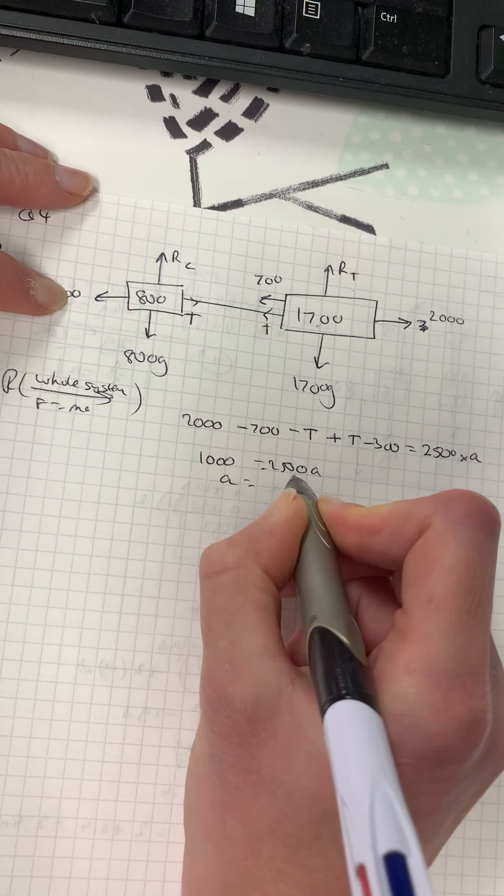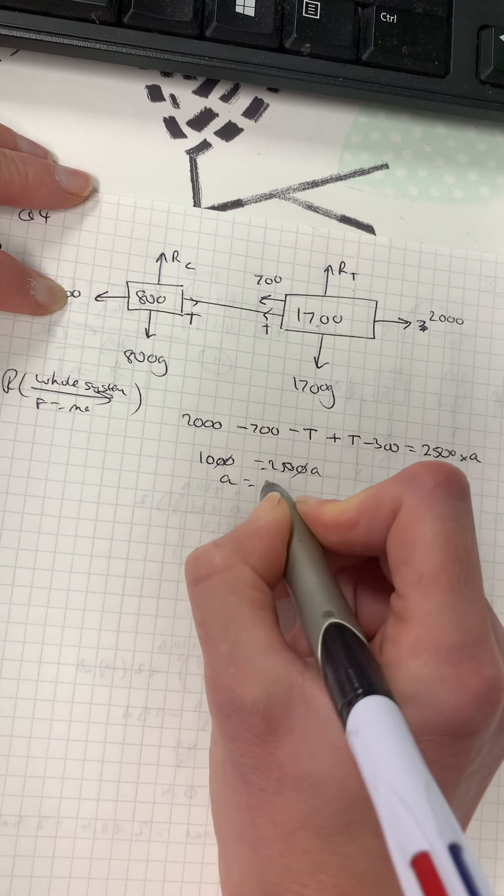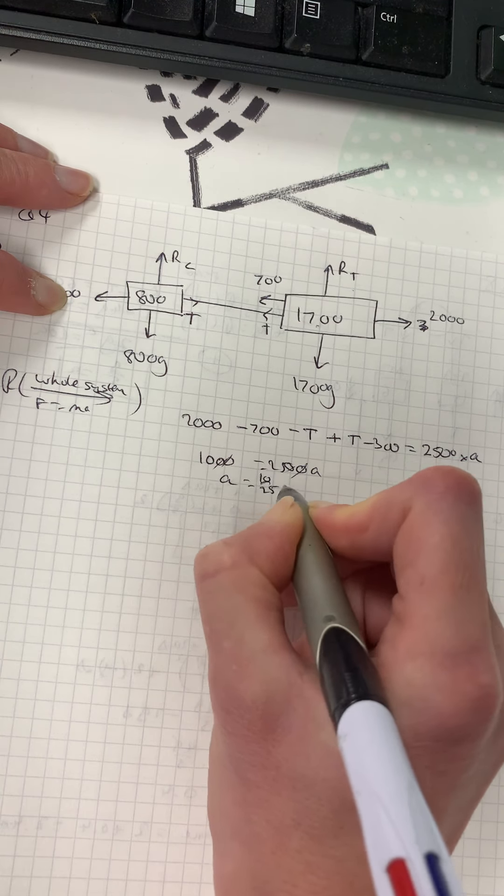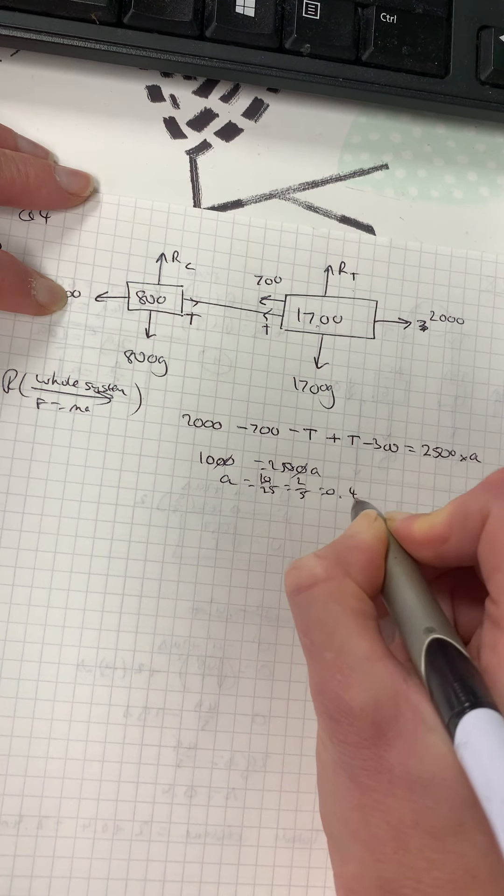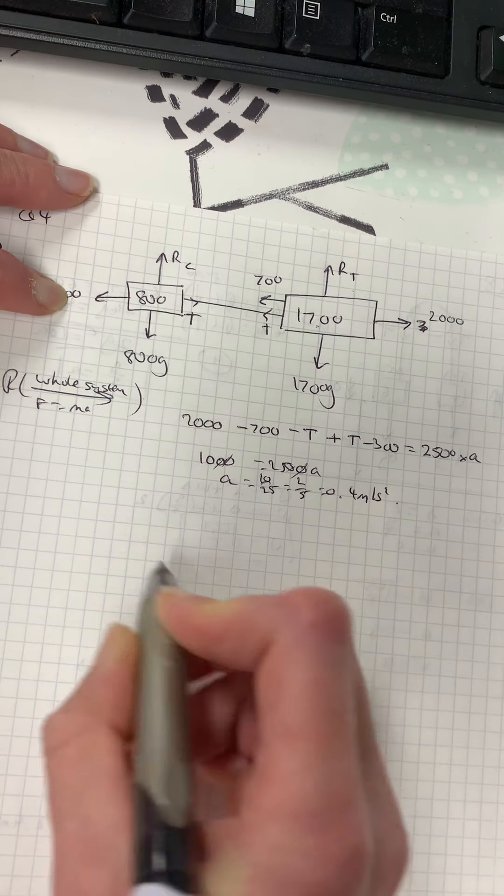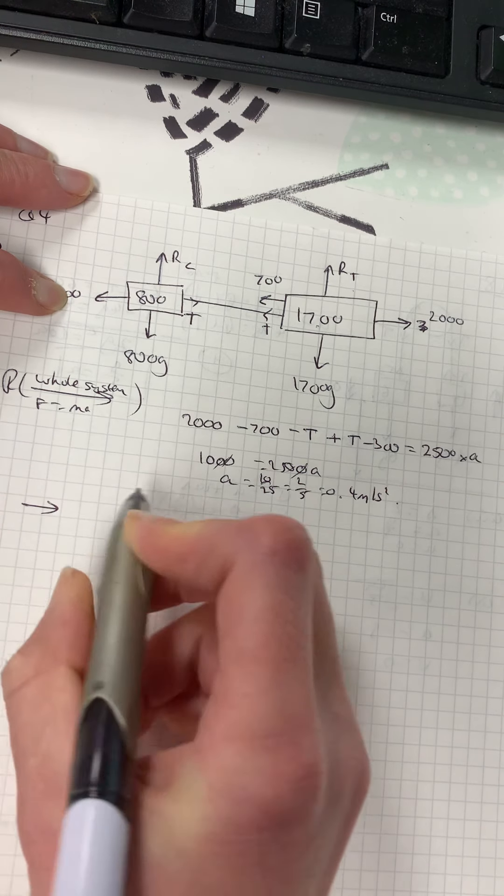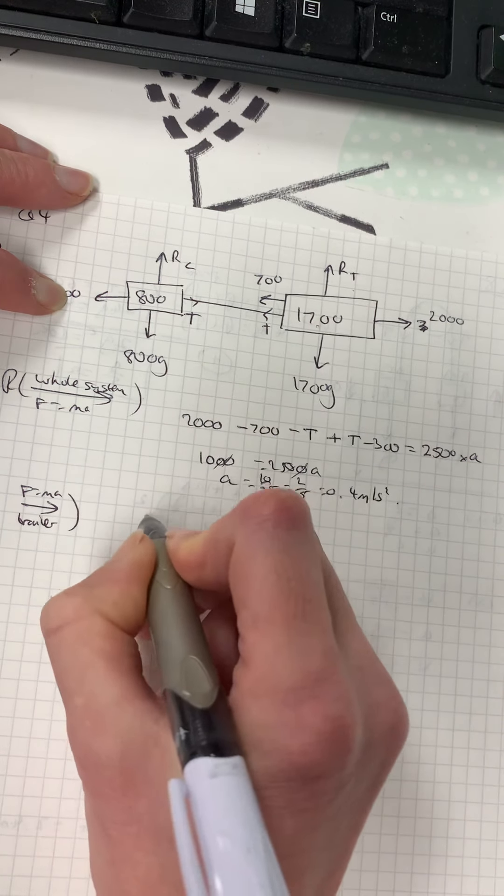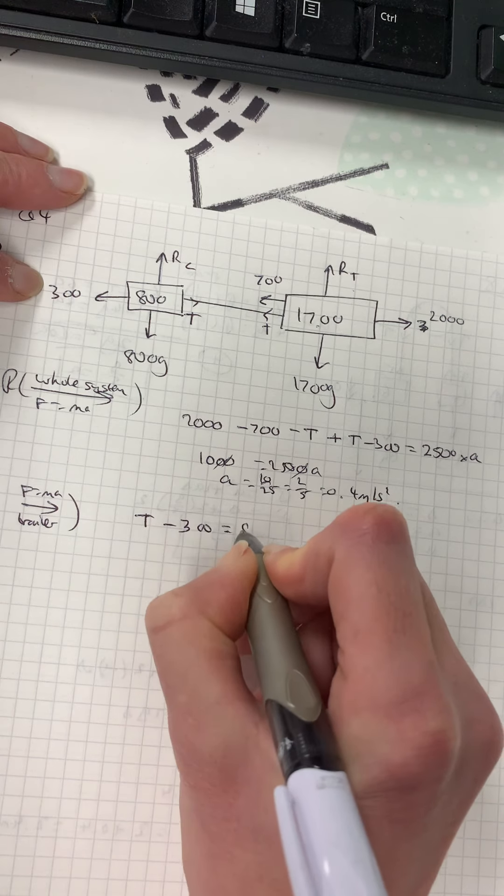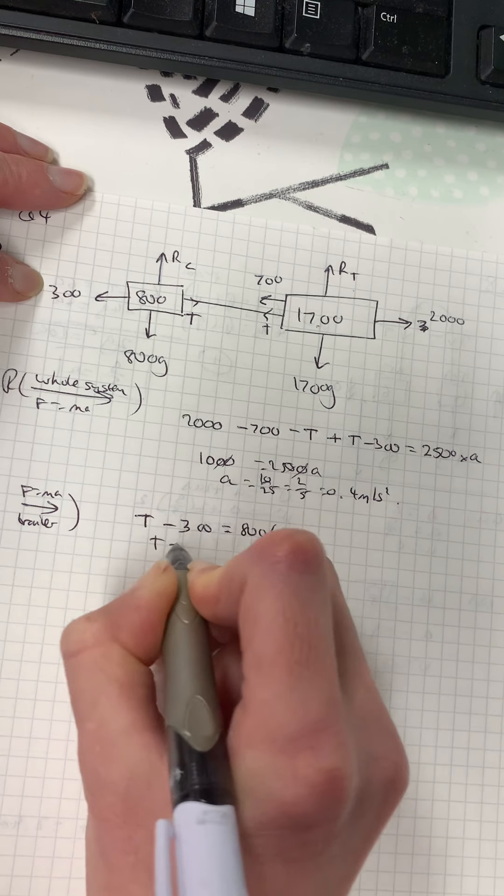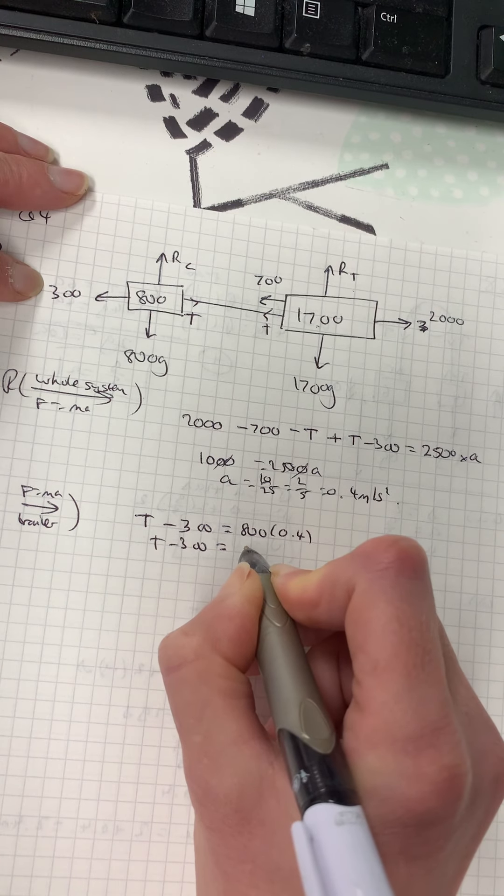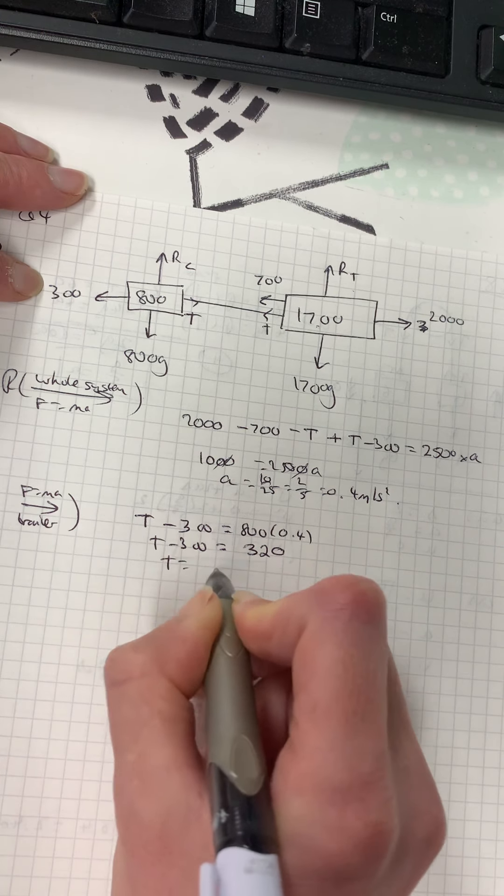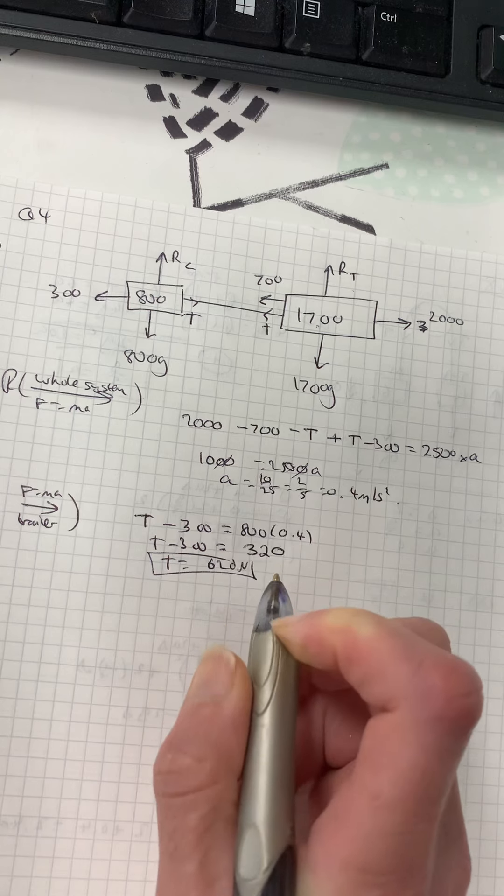So A is 1000 over 2500, or 10 over 25, or 2 fifths, or 0.4. Every way you want to leave that is fine. Now I better do just for the trailer to get all the forces in. So resolve forward for the trailer only. T minus 300 equals 800 times A. So T minus 300 equals 320. So T is 620 newtons.